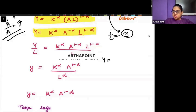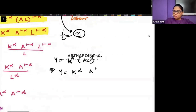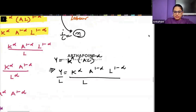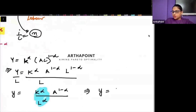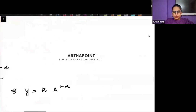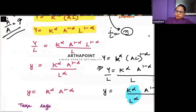So when I divide throughout by L, I get: Y equals K^α · (AL)^(1-α), which means Y equals K^α · A^(1-α) · L^(1-α). Dividing throughout by L gives me small y equals K^α · A^(1-α) divided by L^α. Clubbing this together, I get small y equals small k^α · A^(1-α). This is the first key result.